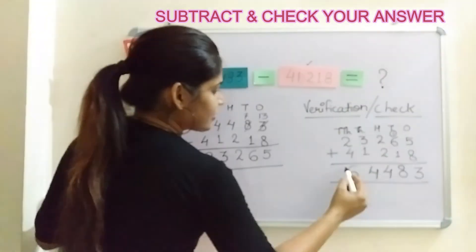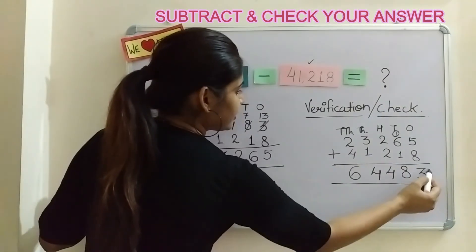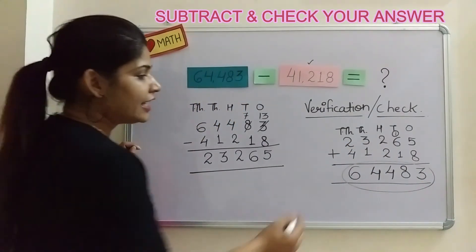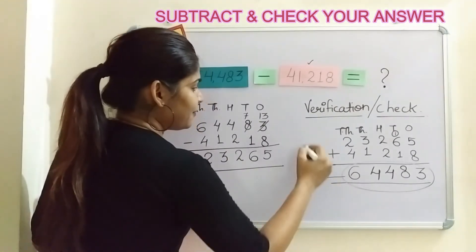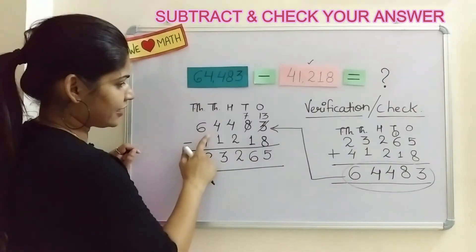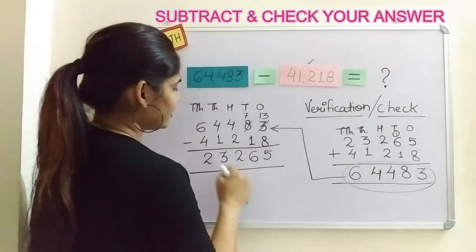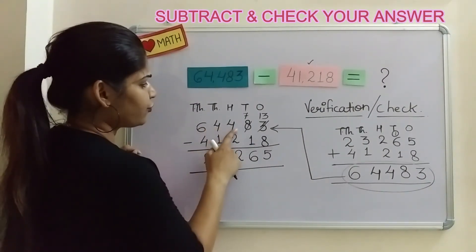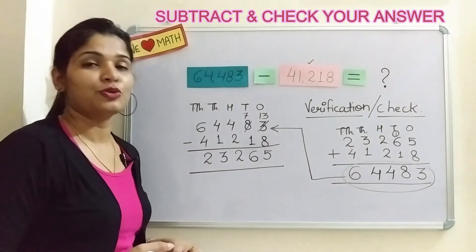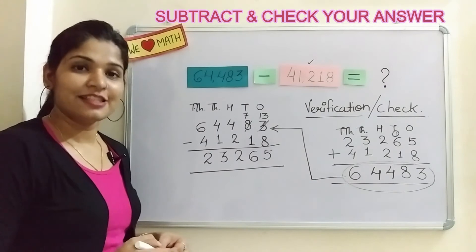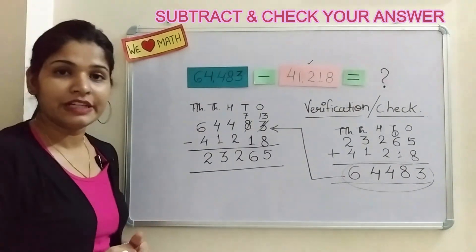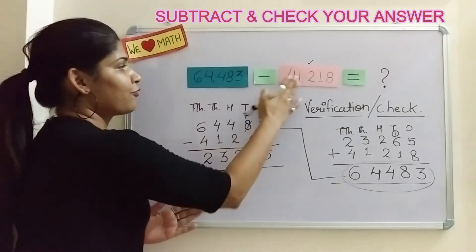Whatever sum we have got should be the same as the minuend. Let us check — it is 64,483, and the minuend is also 64,483. That means we have performed the question correctly! Yes, this is the way to check it.